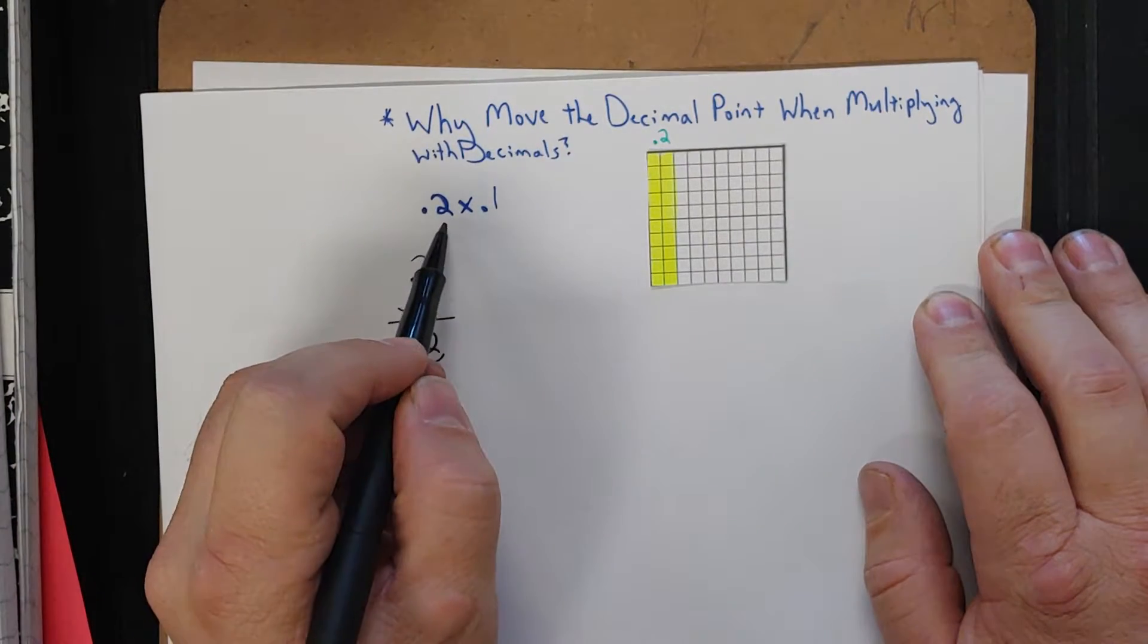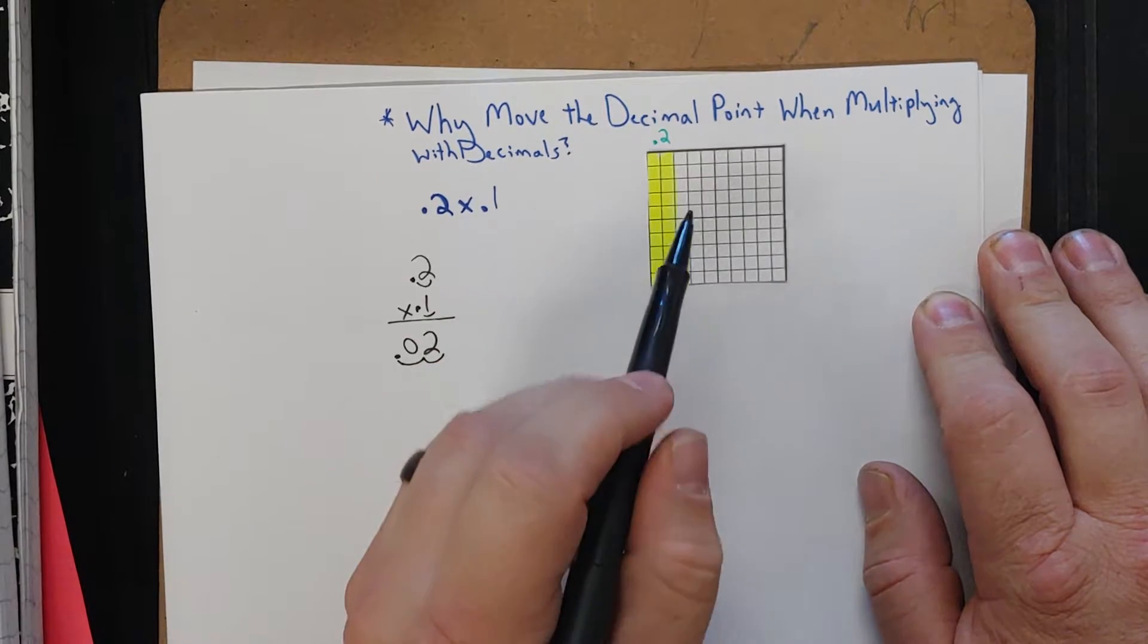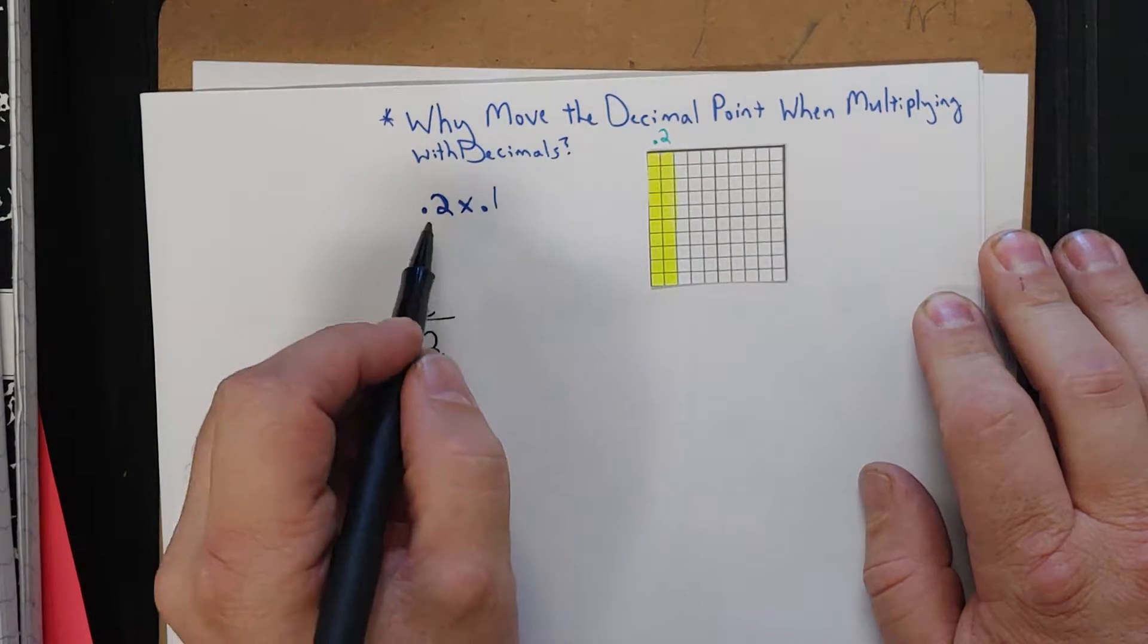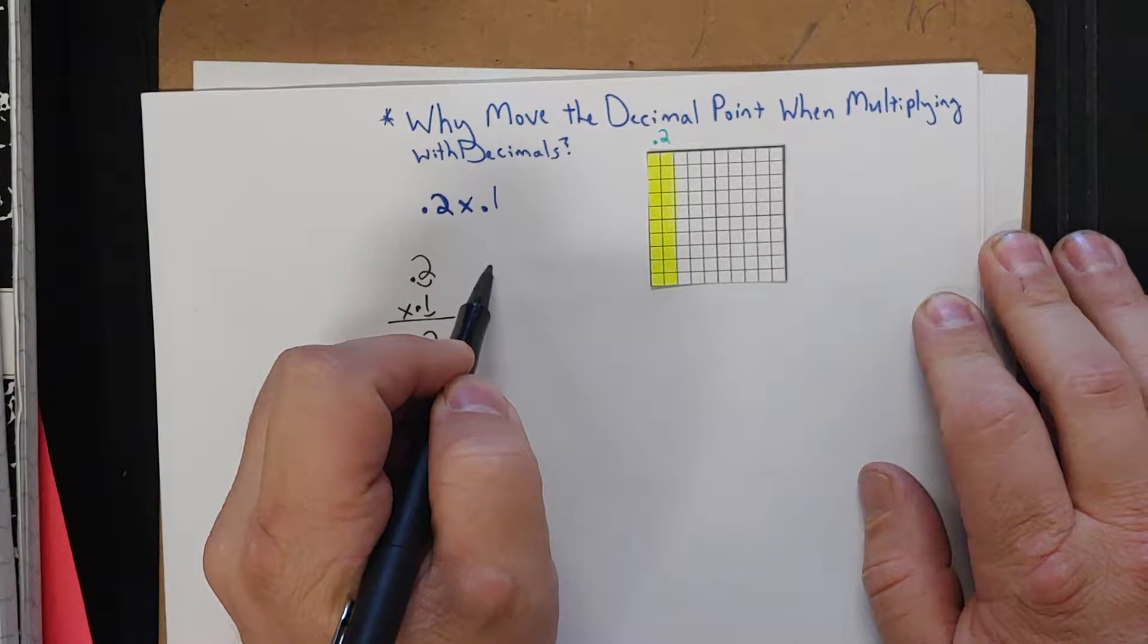So again, I'm going to start with 2 tenths times 1 tenth. And I've drawn out in my hundredth grid 2 tenths. And again, I'm not taking one group of 2 tenths, I'm taking 1 tenth group of 2 tenths.